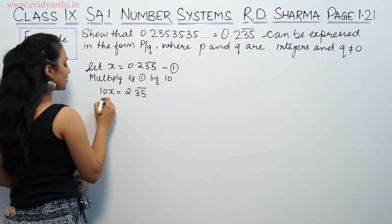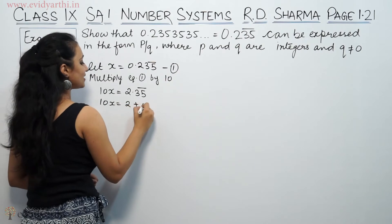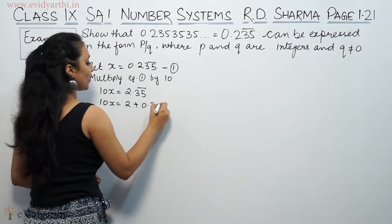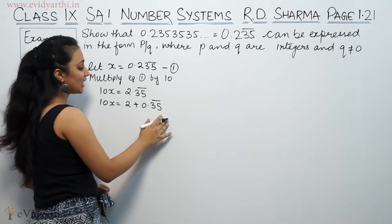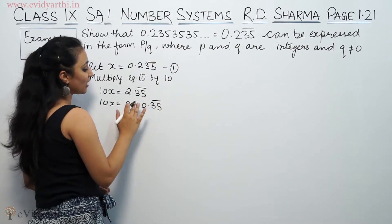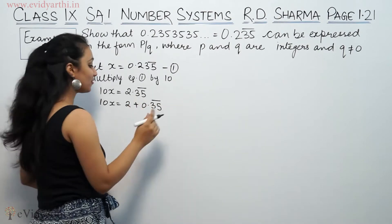Now, if we take this: 10x = 2 + 0.35 bar. So it will be 2 plus 0.35 bar.